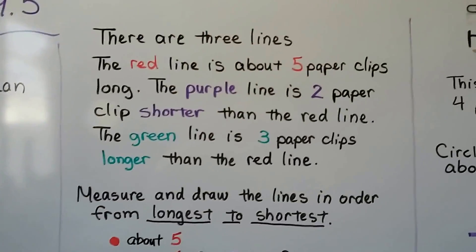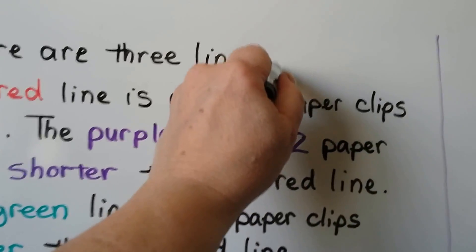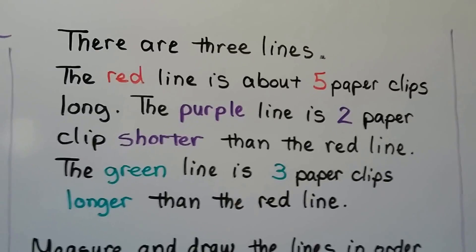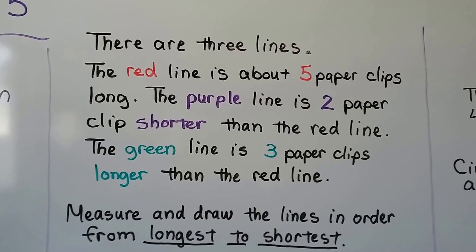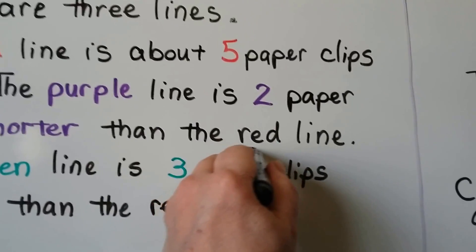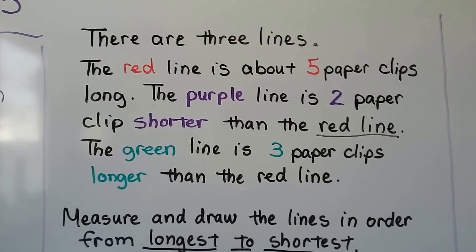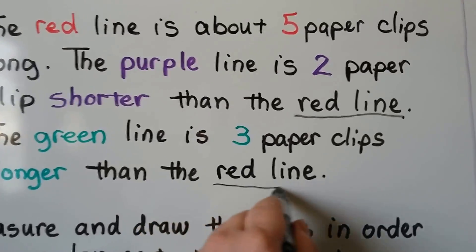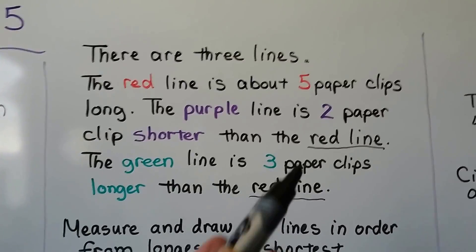Here's another one. There are 3 lines. The red line is about 5 paperclips long. The purple line is 2 paperclips shorter than the red line, so it's comparing the purple one to the red line. The green line is 3 paperclips longer than the red line.